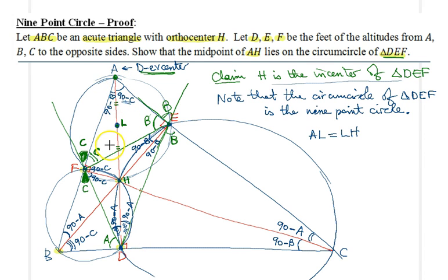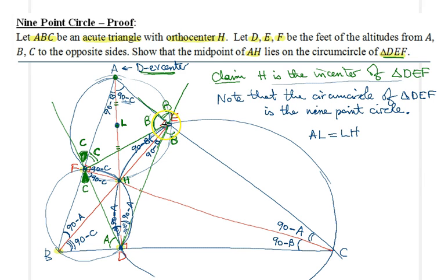Therefore L, the midpoint of AH, lies on the circumcircle of triangle DEF. But we already know the circumcircle of triangle DEF is simply the nine-point circle. So we have proved that the midpoint connecting a vertex of the triangle to the orthocenter must lie on the nine-point circle. That's a beautiful result — hope you enjoyed the proof, and see you in the next lecture.